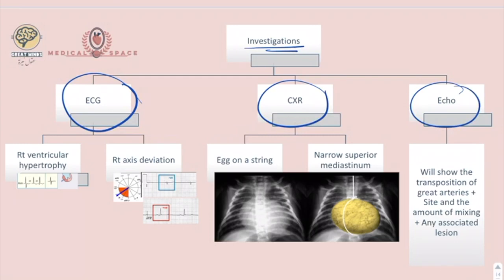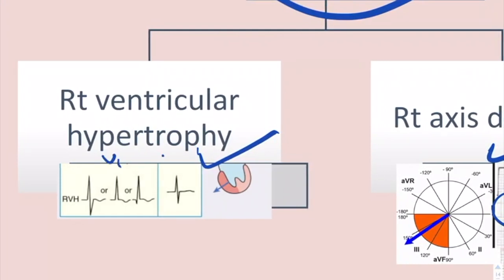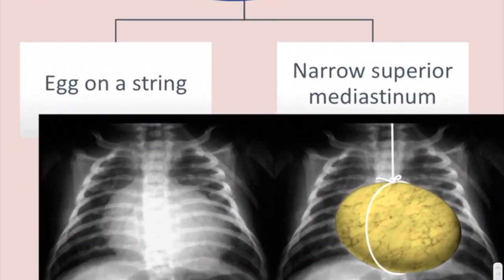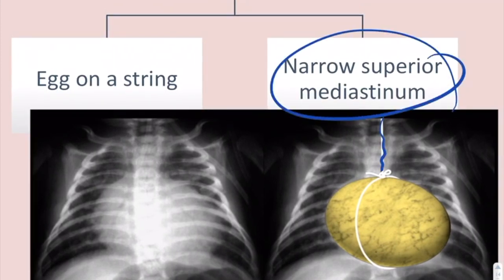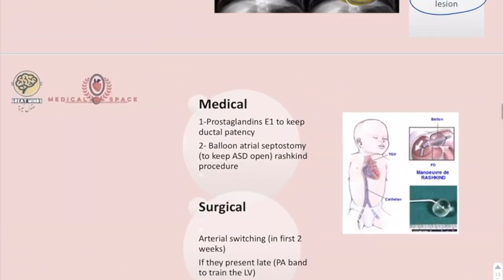Investigations include ECG, chest X-ray, and echo. On ECG, you will see right axis deviation and right ventricular hypertrophy. In lead I, there is a negative deflection of the QRS complex; in AVF, a positive deflection. For right ventricular hypertrophy, V1 shows a tall R wave and V6 shows a deep S wave. On chest X-ray, you will see an egg-on-string appearance due to narrowing of the superior mediastinum. On echo, you can see the transposition, the site and amount of mixing, and any associated lesions.